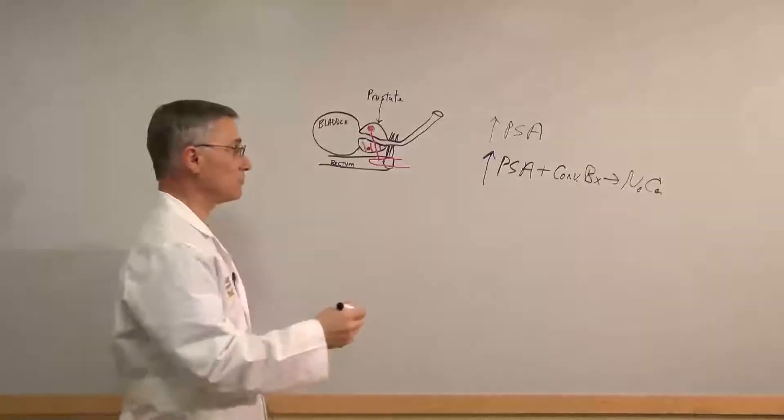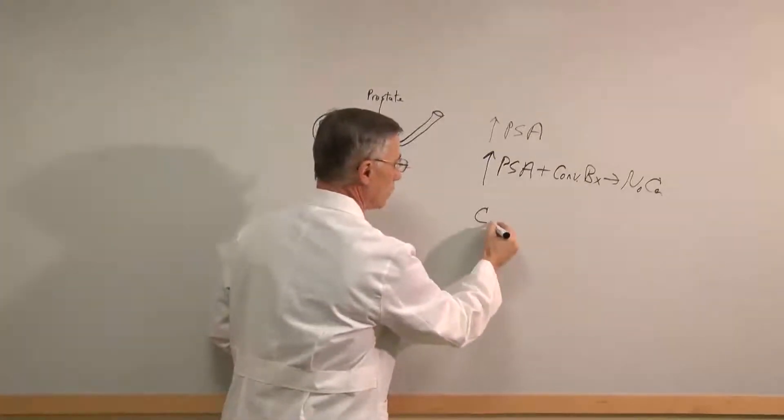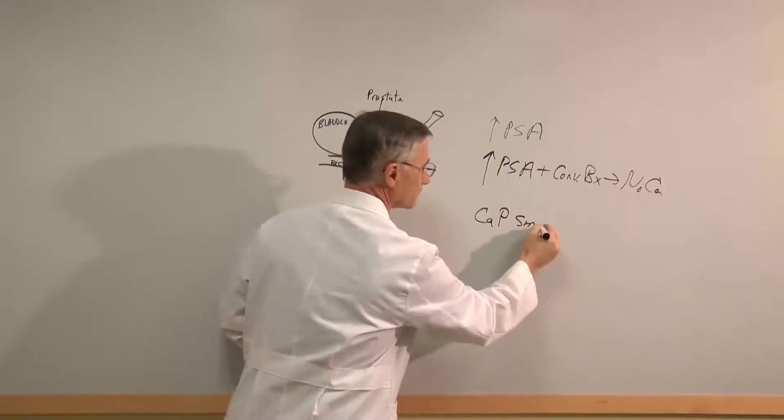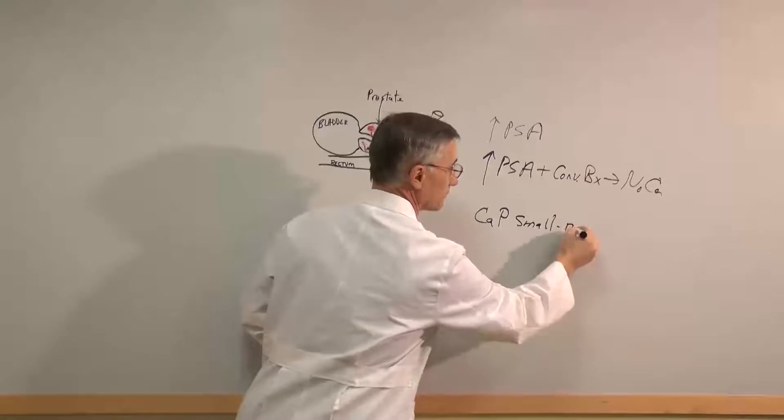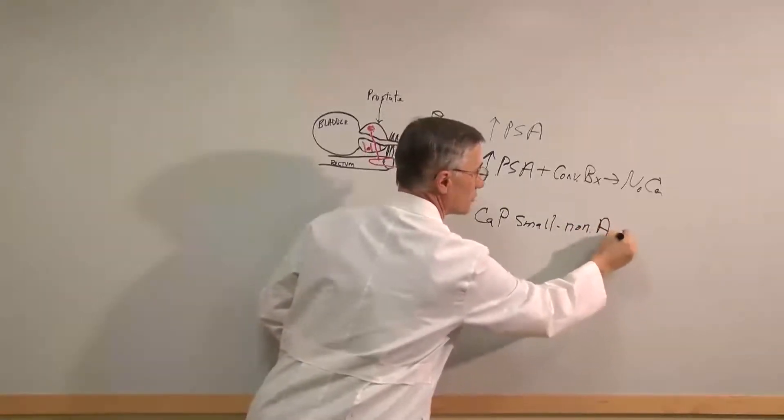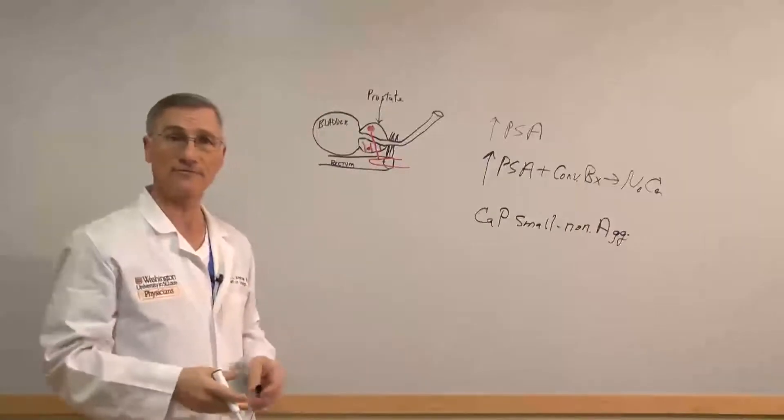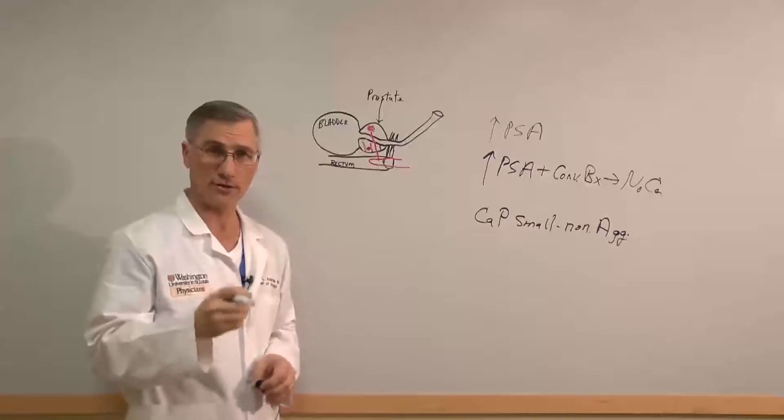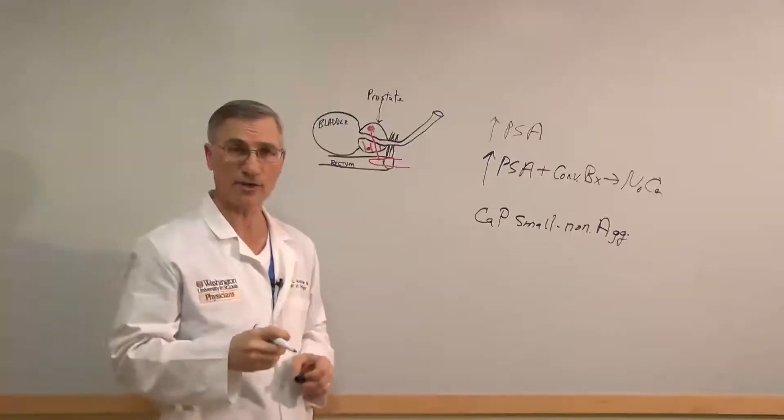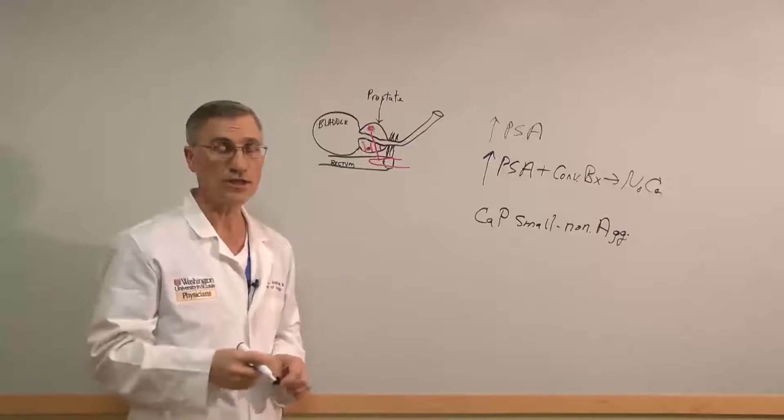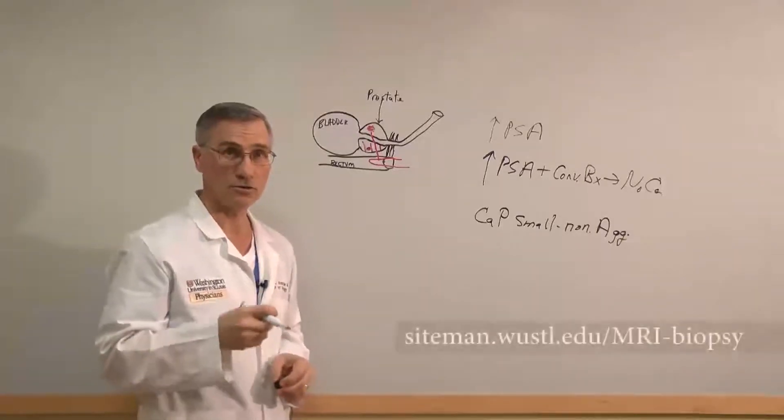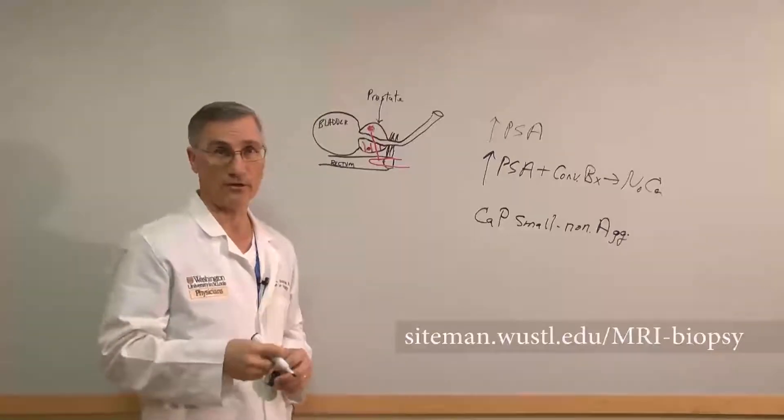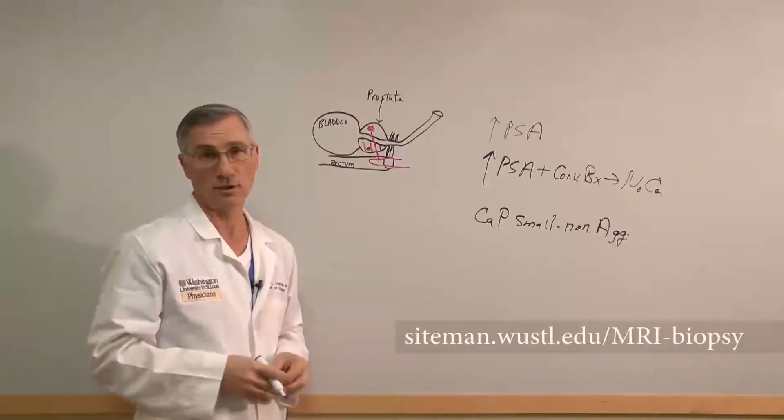And the final group of men who really benefit from this are men who already have a diagnosis of prostate cancer that is small and non-aggressive. These patients are usually placed on what we call active surveillance. We want to watch them very carefully to see whether this small, seemingly non-aggressive cancer is growing or not. And using the MRI and using MRI-targeted fusion biopsies is much more accurate in determining whether that man's cancer is growing or not.